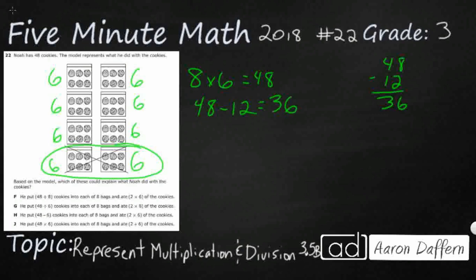That makes sense because if you look at this top chunk right here, look at that six times six. Six times six is going to equal 36. So he had 48, then he ate some, and then he only has 36 left.